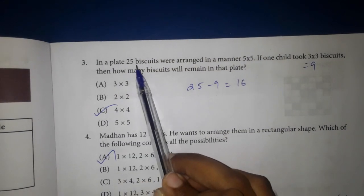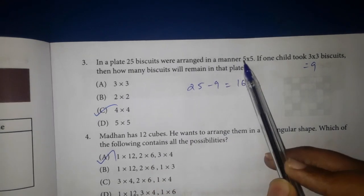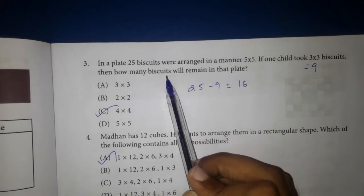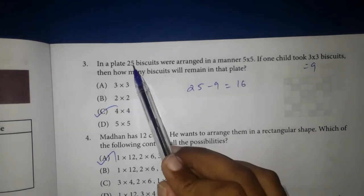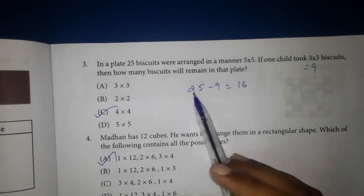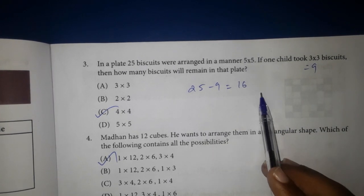3rd one. In a plate, 25 biscuits were arranged in a manner 5 x 5. If one child took 3 x 3 biscuits, then how many biscuits will remain in the plate? 25 biscuits 5 x 5. 3 x 3 is 9. So, 25 minus 9 is 16.